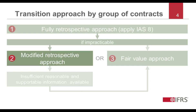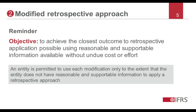Firstly, we will discuss further details about applying the modified retrospective approach. The rest of this webcast assumes that the entity is eligible to apply the modified retrospective approach to a group of contracts — that is, it is impracticable to apply a fully retrospective approach, the entity has reasonable and supportable information to apply the modified retrospective approach, and chooses to do so. The objective of the modified retrospective approach is to achieve the closest possible outcome to the full retrospective approach, using reasonable and supportable information available without undue cost or effort.